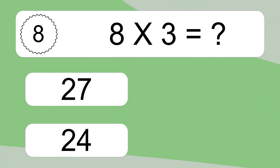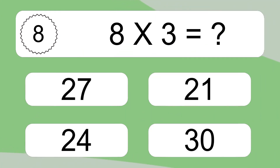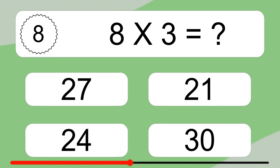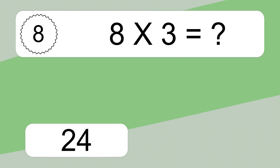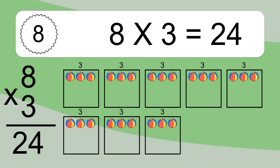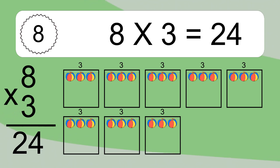8 times 3 equals what? 8 times 3 equals 24. We have 8 boxes, and each box has 3 colorful balls inside. If you count all the balls in all the boxes together, you will have 8 times 3 balls. This equals 24 balls.